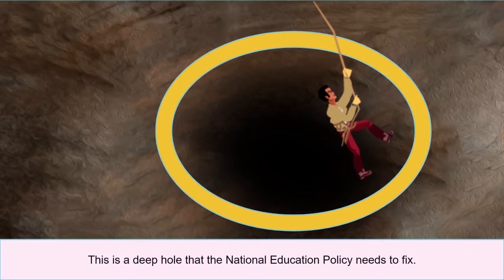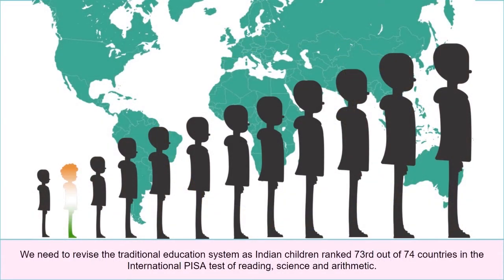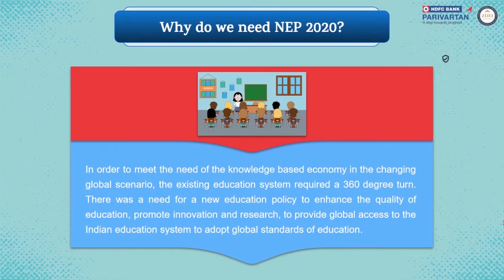This is a deep hole that the national education policy needs to fix. We need to revise the traditional education system, as Indian children rank 73rd out of 74 countries in the international PISA test of reading, science, and arithmetic. In order to meet the needs of the knowledge-based economy in the changing global scenario, the existing education system requires a 360-degree turn. There was a need for a new education policy to enhance the quality of education and promote innovation and research.